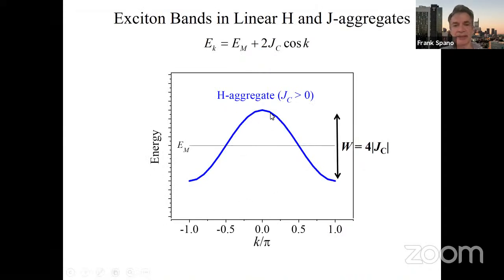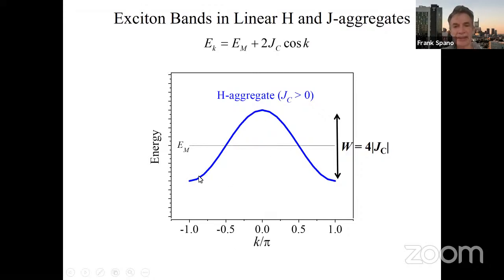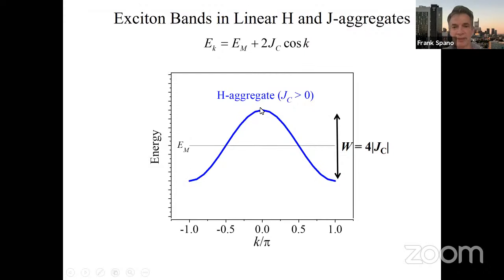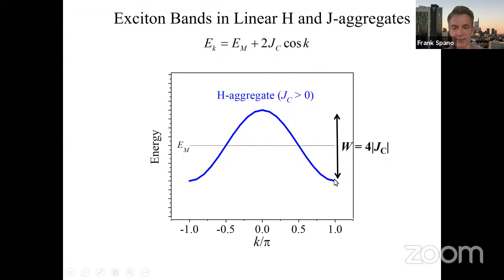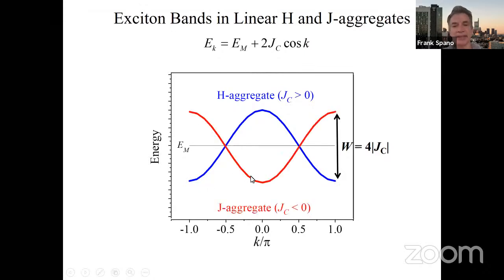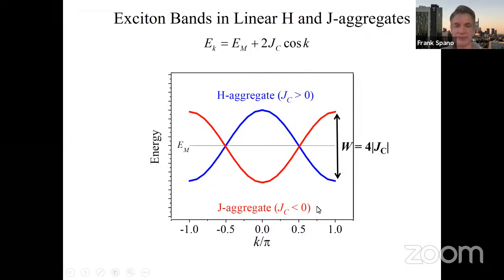I want to show the exciton dispersion. We can summarize it in a graph of exciton energy as a function of the k-vector. For H aggregates, you get a big frown — because when k=0, the optically allowed state is on top of the band, and the k=π state at the band bottom has all the nodes and is very inefficient at emission. If you change the sign, you get a J aggregate — that's a big smile — meaning the k=0 state sits at the bottom of the band. So think: J = smile, H = frown. The bandwidth is four times the nearest-neighbor coupling. J aggregates are very efficient super-radiant emitters, while H aggregates are very inefficient emitters because the band-bottom state has all those nodes and ideally zero oscillator strength.